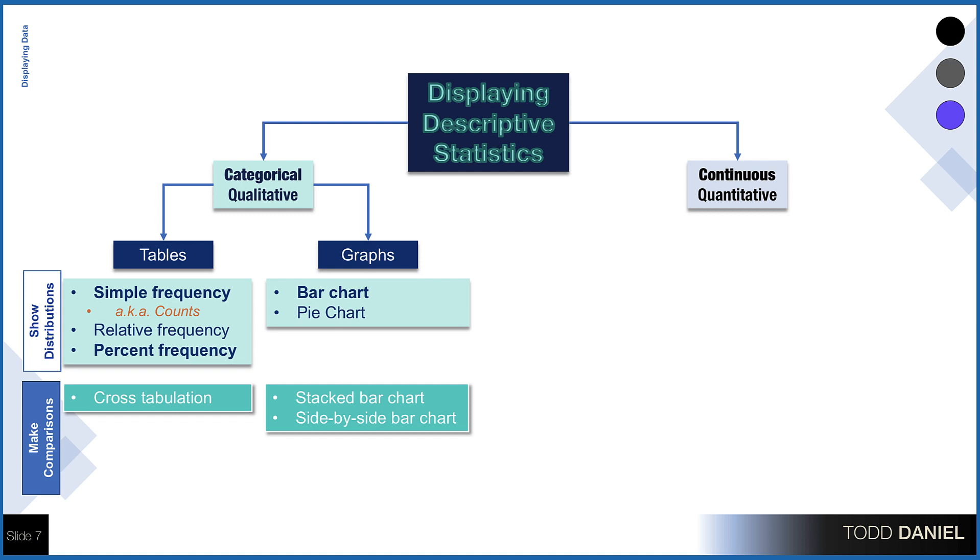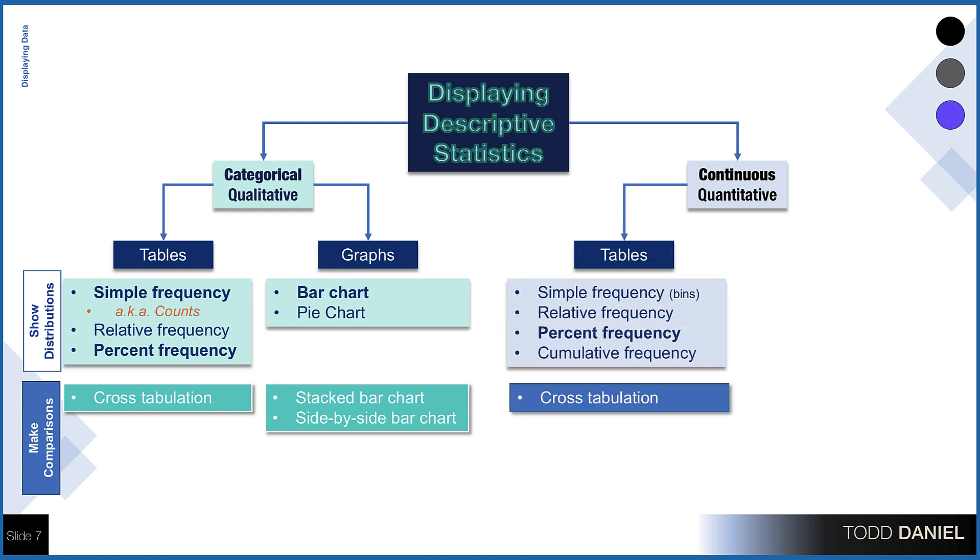The bold lettering indicates my recommendations for choosing descriptive statistics. Use simple frequency, or counts, along with percent frequency for categorical variables and display them using a bar chart. For our continuous variables, we could choose between simple frequency, relative frequency, percent frequency, and cumulative frequency. I tend to report continuous data using percent frequency, although if you use simple frequency, we tend to categorize our continuous variables into smaller groupings called bins or binned data.